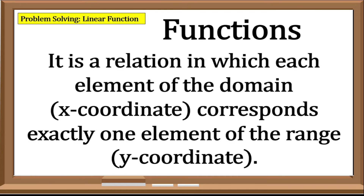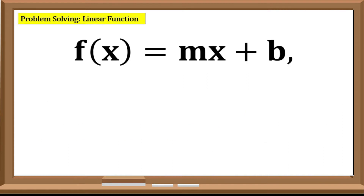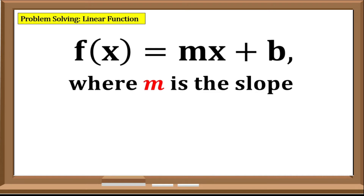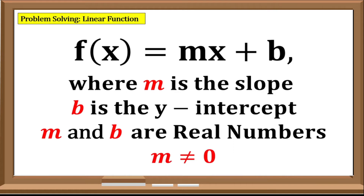Let us define again what is a function. It is a relation in which each element of the domain, or the x-coordinate, corresponds to exactly one element of the range, or the y-coordinate. In other words, it is a relation in which no two or more ordered pairs have the same x-coordinate, or the domain. The abscissa is unique. A function is illustrated as f(x) = mx + b, where m is the slope, b is the y-intercept, m and b are real numbers, and m should not be equal to zero.